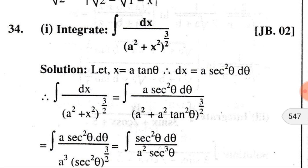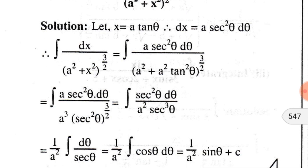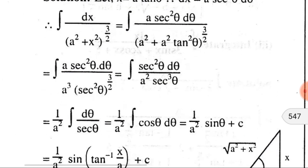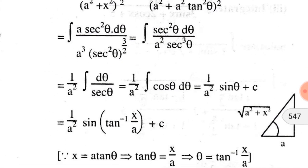Taking a² as a common factor, the remaining part (1 + tan²θ) can be written as sec²θ. After calculation we get (1/a²) integration dθ divided by sec θ. Since 1/sec θ equals cos θ, and the integral of cos θ is sin θ, we replace the integration of cos θ dθ by sin θ plus C.